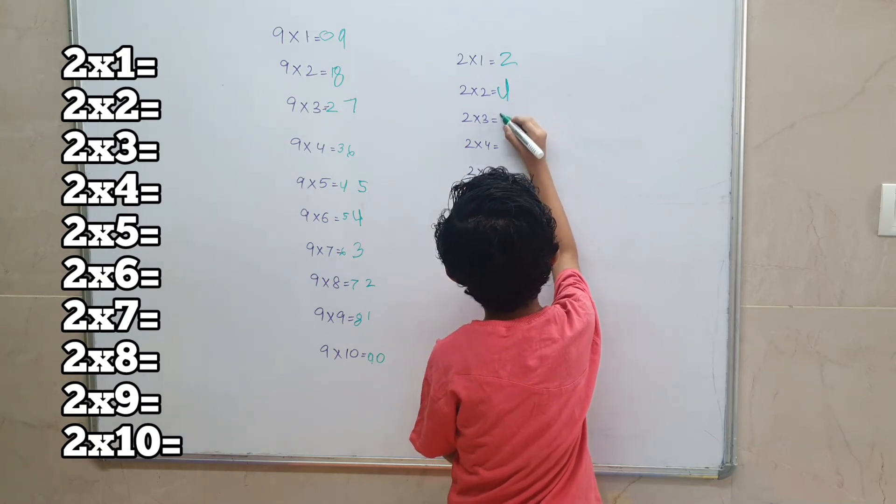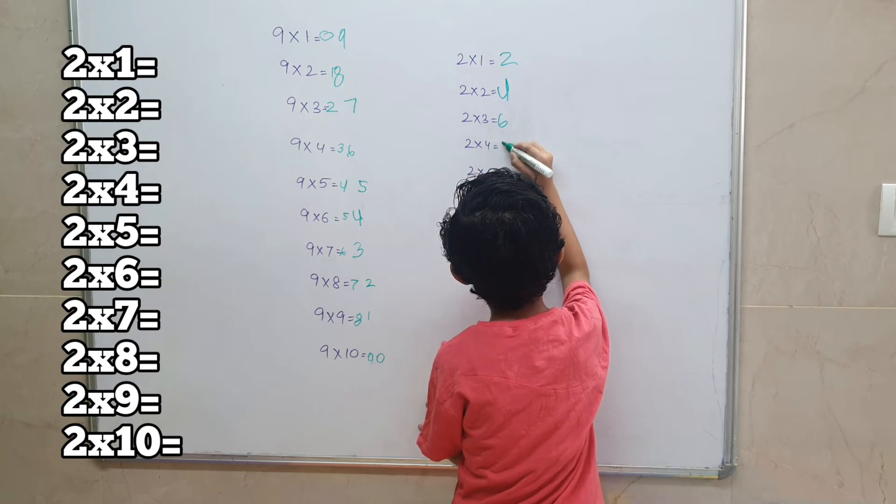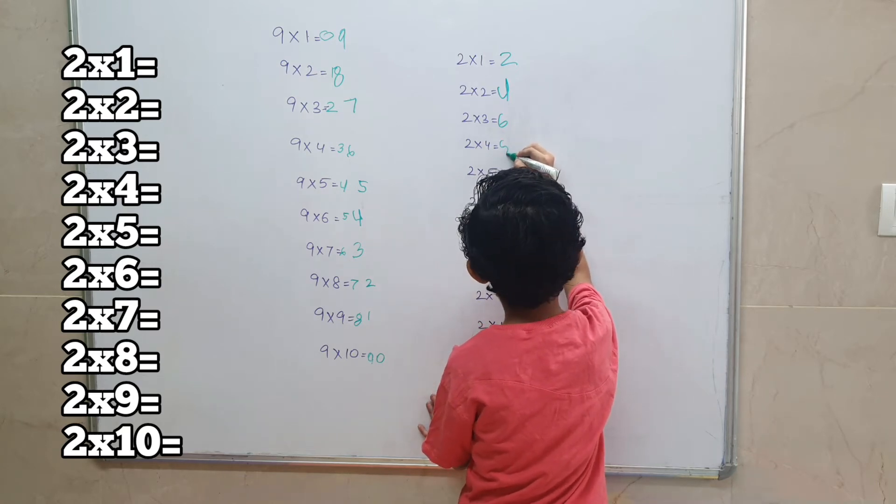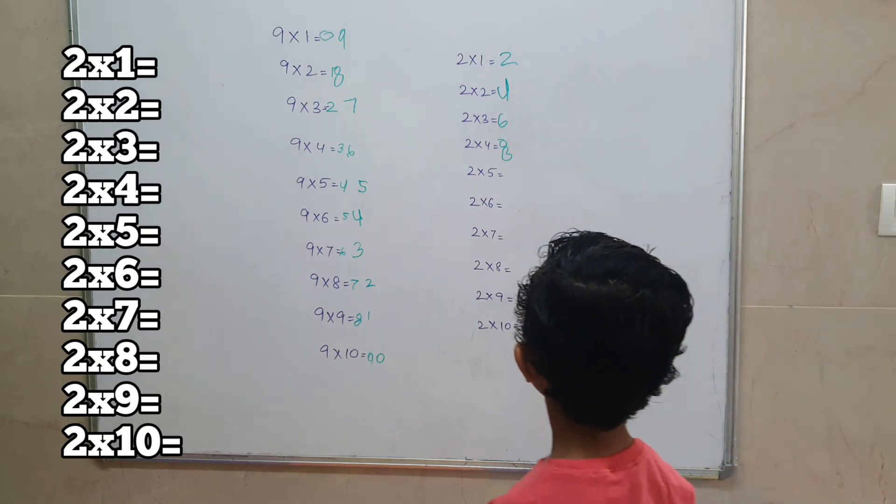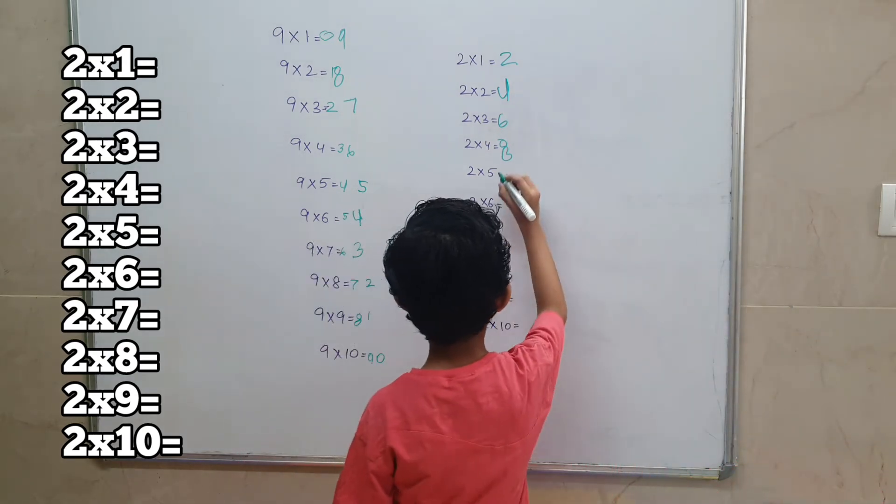Okay, now Kyan will solve the table of two. Two, two, four, six, six, very good, eight. What are you doing? Okay, it's a new form. It's eight, so let's take it. Two, four, six, eight.